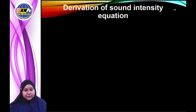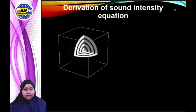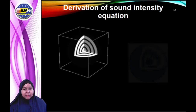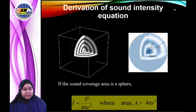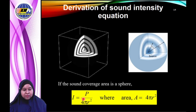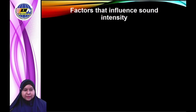The variation of sound intensity — sound waves flow out from the source in all directions. For example, when I'm speaking, everybody in front of me, to the left, to the right, and also behind me can hear. This is because sound waves flow away from the source in three dimensions, like a spherical wave. If the sound coverage area is a sphere, then Intensity = Power / (4πr²), where the power from the source is constant and the area A equals 4πr².